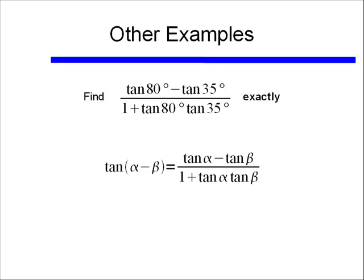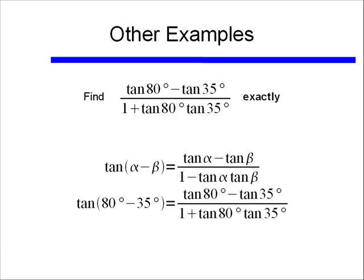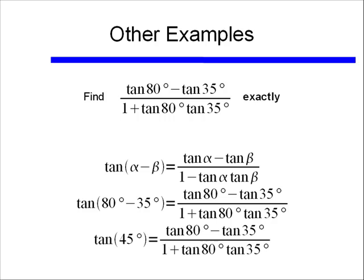Plugging in the values of alpha and beta, we find that tangent of 80 degrees minus tangent of 35 degrees, over 1 plus tangent of 80 degrees times tangent of 35 degrees, simply equals tangent of 80 degrees minus 35 degrees, or tangent of 45 degrees. And tangent of 45 degrees is just equal to 1. So that whole expression just equals the value 1, exactly.